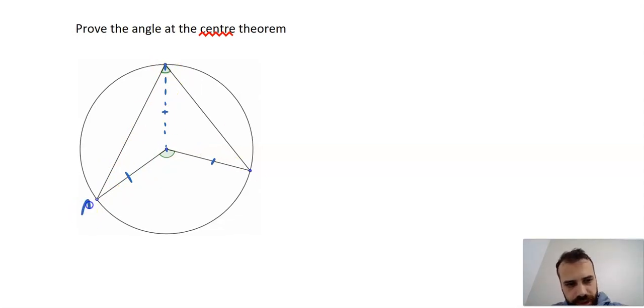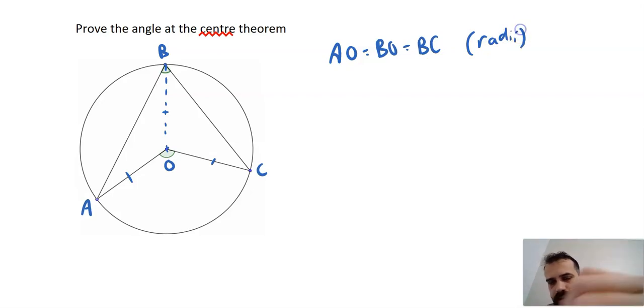I'm going to write up a bunch of labels here: A, B, C, and O for the origin. Now I can say that AO equals BO equals BC because they're all radii, and I can say that triangle ABO and triangle BCO are isosceles.